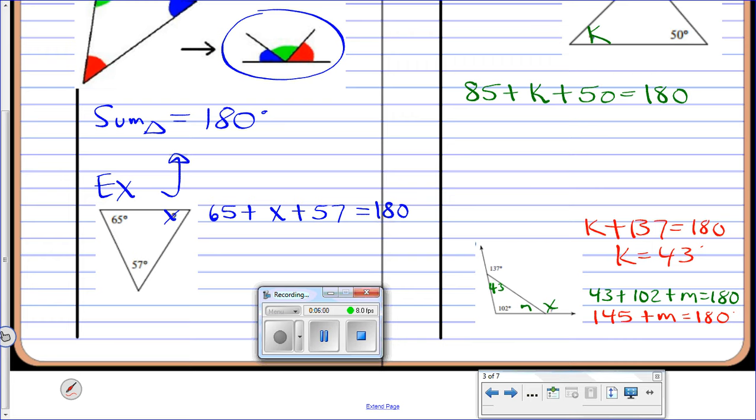Now, just combining my like terms here, I get 145 plus that M equals 180. So, this equation right here is because the sum of the interior angles is equal to 180. This equation is equal to 180 because it's a linear pair. So, I'm going to subtract 145 from each side, and I end up finding that M, that interior angle, is 35 degrees if I did my math right.